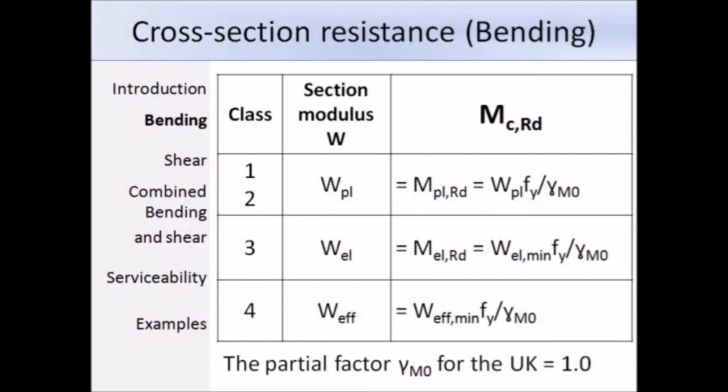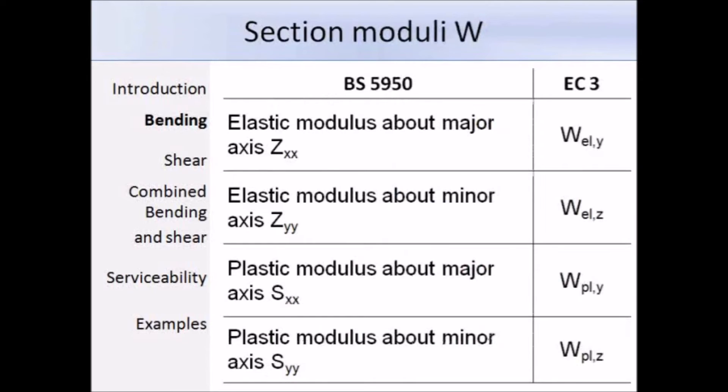To compare the notation of the section modulus in BS 5950 and Eurocode 3, we have this table. In Eurocode 3, subscripts are used to differentiate between the different moduli. For example, here we have EL and that means elastic modulus. PL means plastic modulus. So the terms are quite meaningful. And the values of the different moduli are given in the section tables.